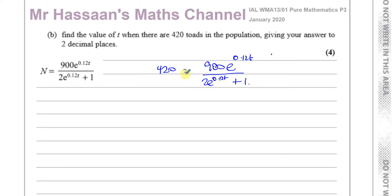So let's get rid of the fraction by multiplying both sides by 2 e to the power of 0.12t plus 1. So I have 420 multiplied by 2 e to the power of 0.12t plus 1 equals 900 e to the power of 0.12t. Now to solve this, I think I'll make my life easier if I divide both sides by 60. That will get rid of these big numbers. So 420 divided by 60 is 7, and 900 divided by 60 is 15.